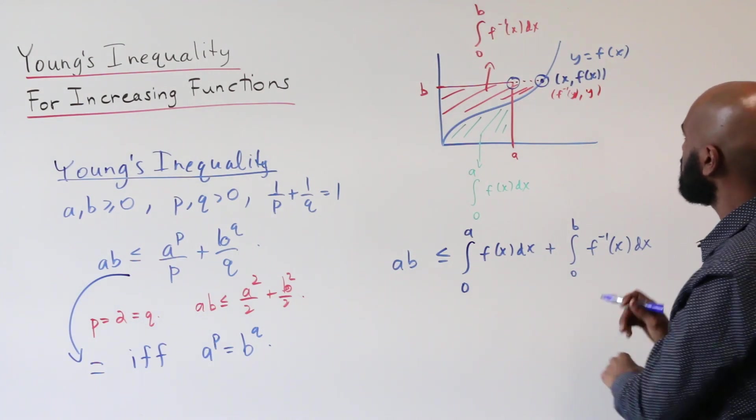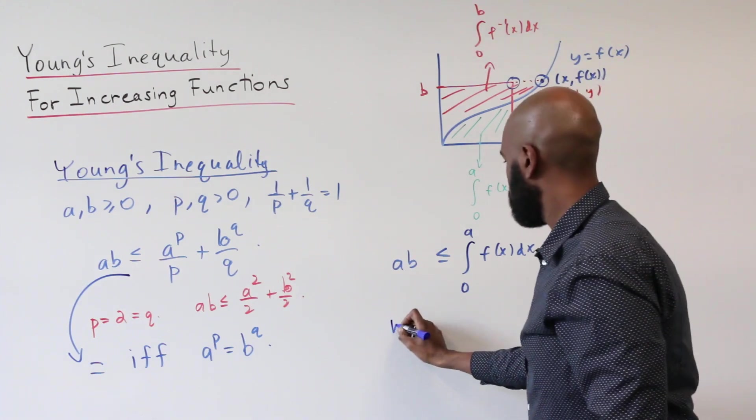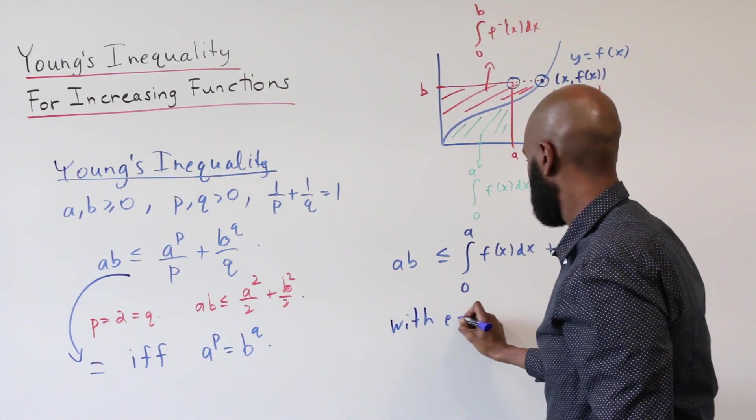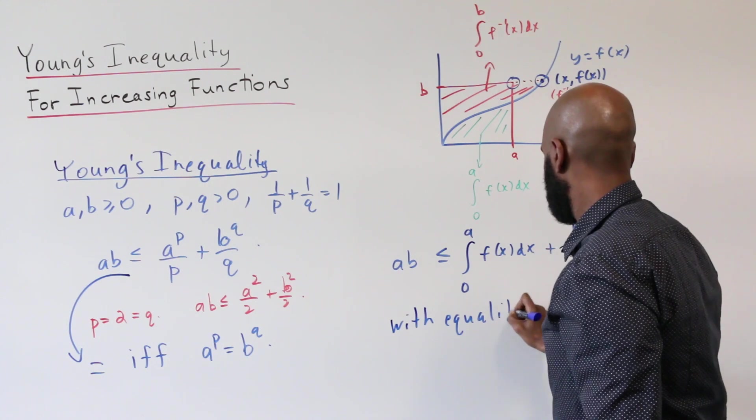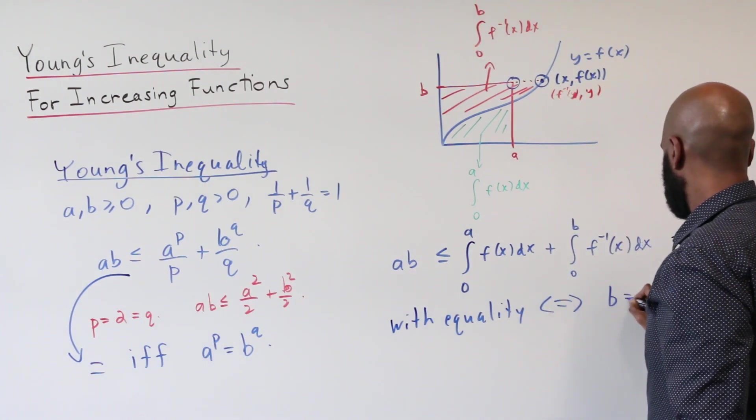Or in other words, B is itself f of A. So with equality, if and only if, B is f of A.